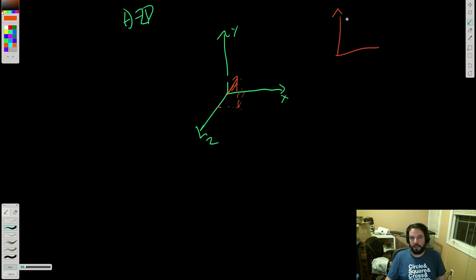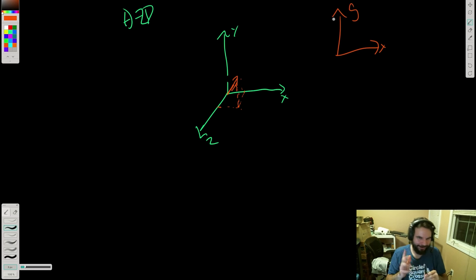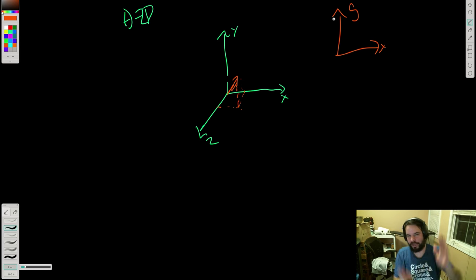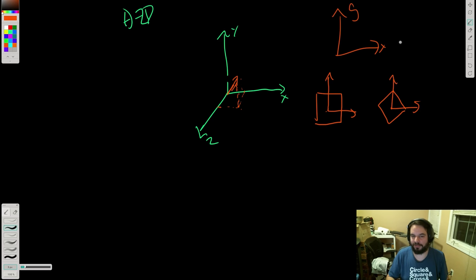If we go back to our 2D example with just X and Y, we could say in 3D there's a Z axis coming straight out at us, and we can rotate about that. A 2D rotation of theta equals 45 degrees is really the same thing as a 3D rotation about the Z axis.